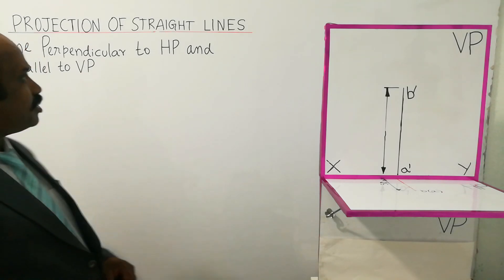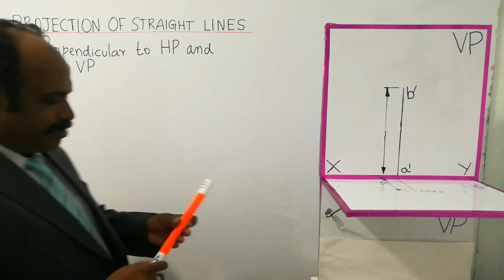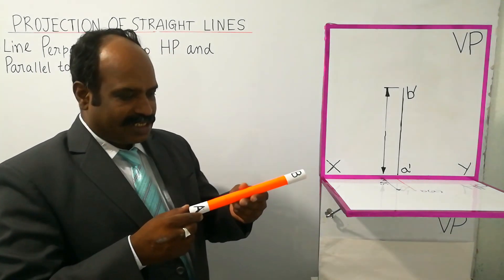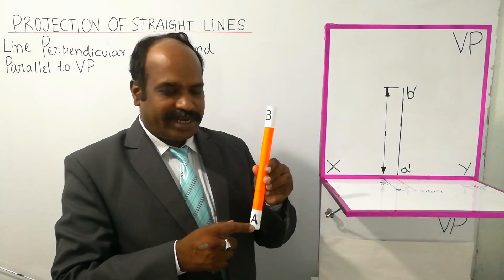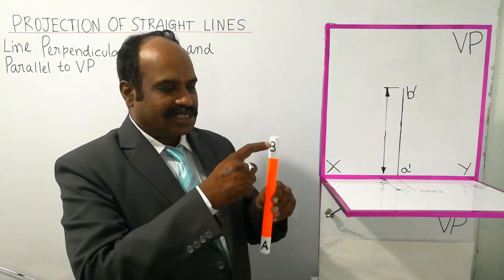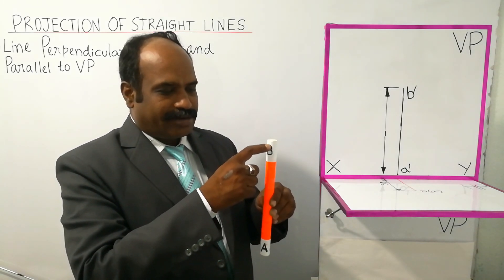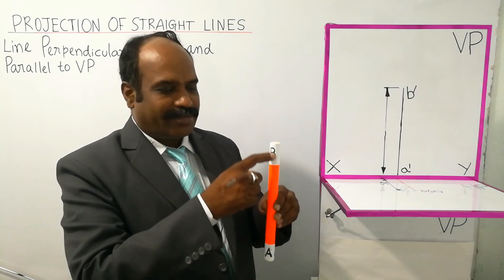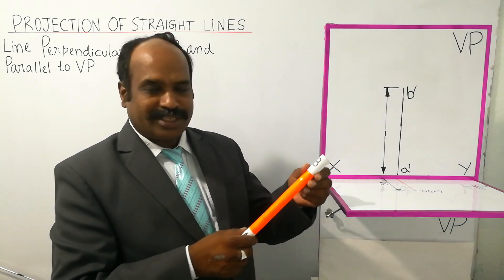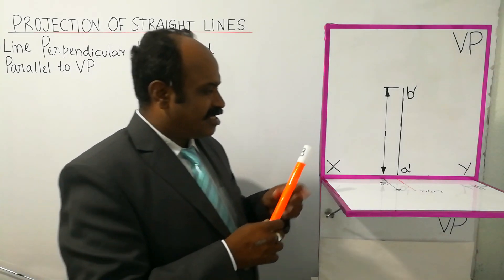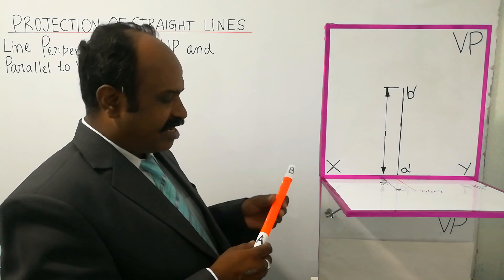Welcome! This is the projection of straight lines. If you consider a straight line, this is the end point A and the end point B. A and B are connected by a straight line. This is the first quadrant.